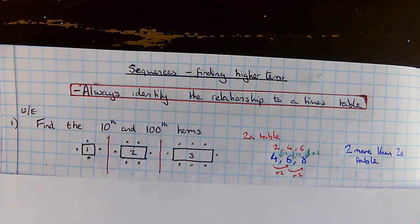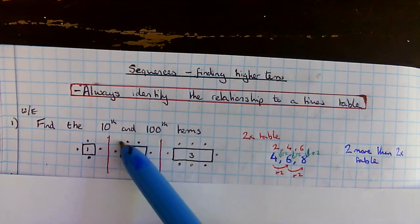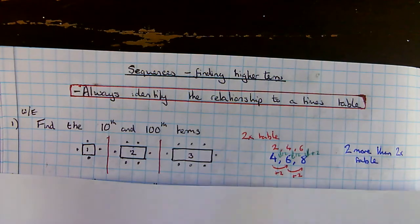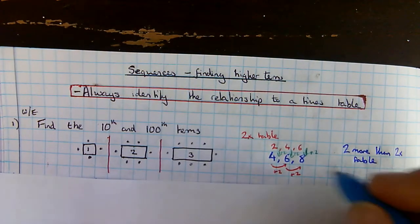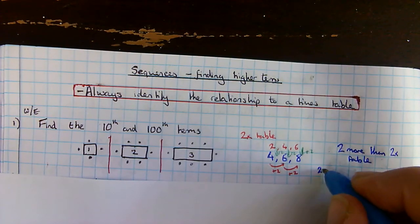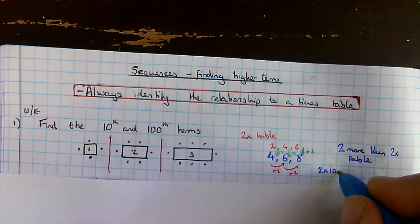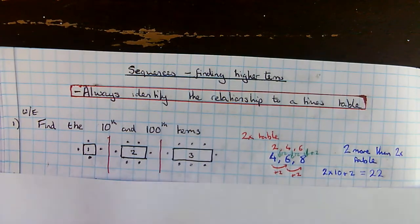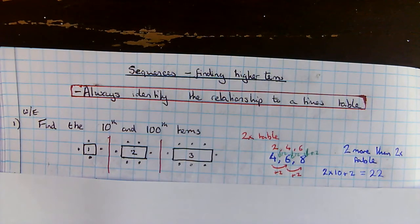Once I start thinking of it like that, finding the tenth and hundredth term is easy. Because the tenth term in the two times table is two times ten, that's twenty. Plus two tells me that the tenth pattern would give me twenty-two people.